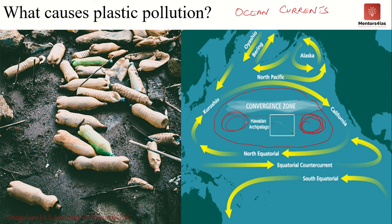There is so much plastic in the ocean that if you collected it all, you could form a new continent in the Pacific Ocean. The garbage is further divided into tiny particles — not a visible island of garbage, but tiny particles that are difficult to see, forming these large garbage patches that have accumulated in the Pacific Ocean.